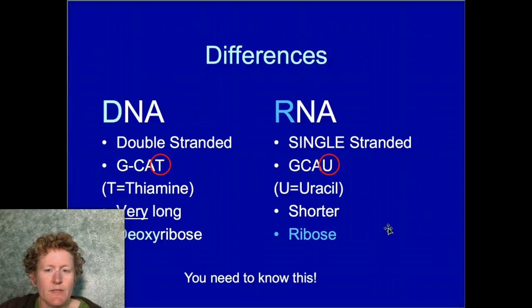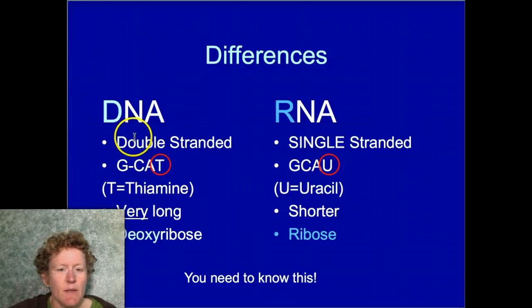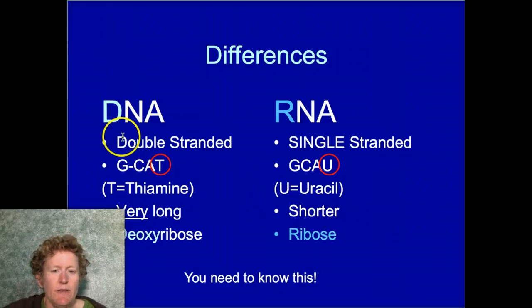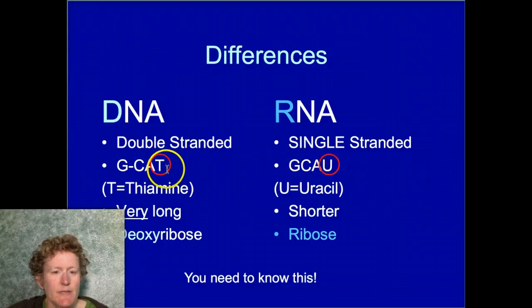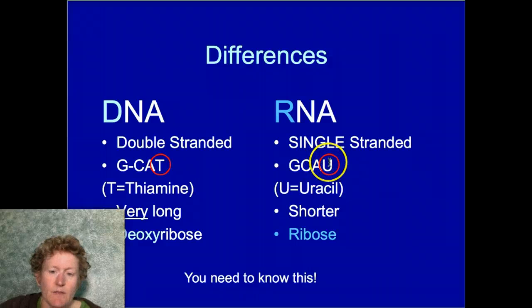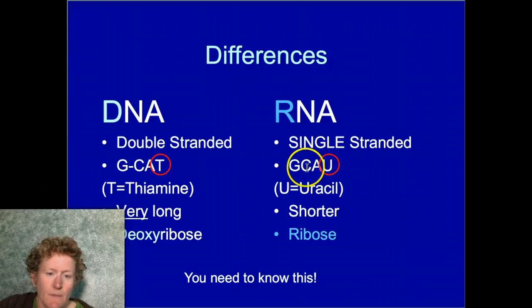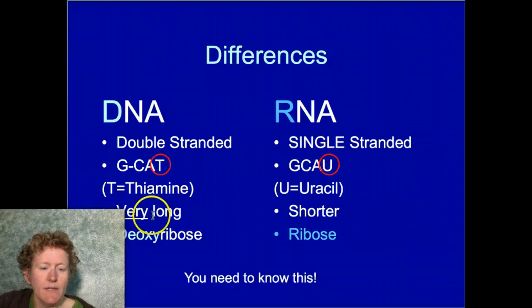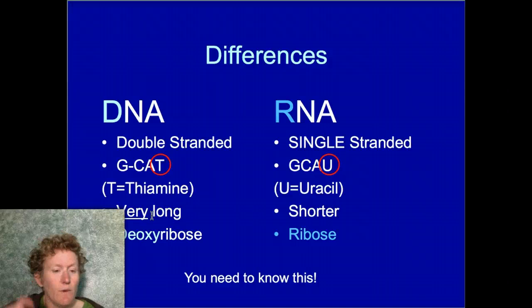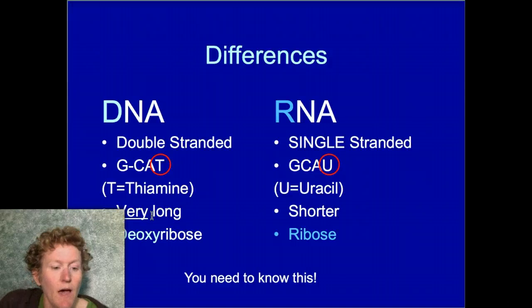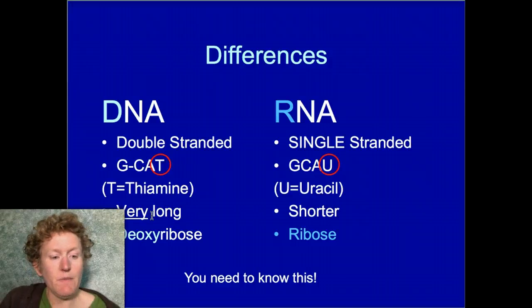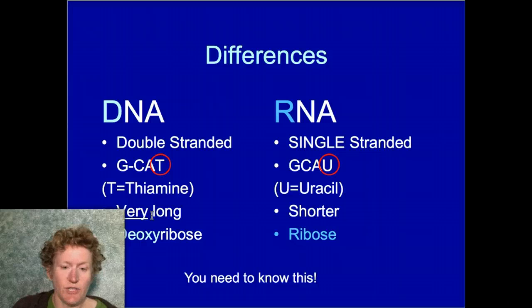There are some differences between DNA and RNA. DNA is double-stranded — D for double. They have different bases: DNA has thymine where RNA has uracil. DNA is really, really long — one DNA molecule can be up to three meters, longer than your couch.